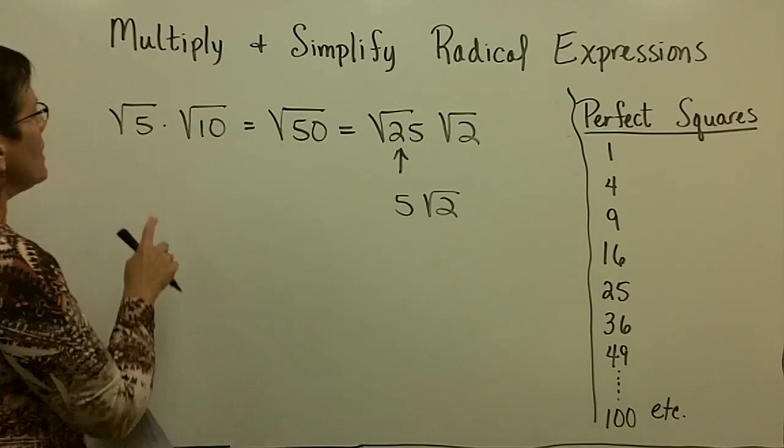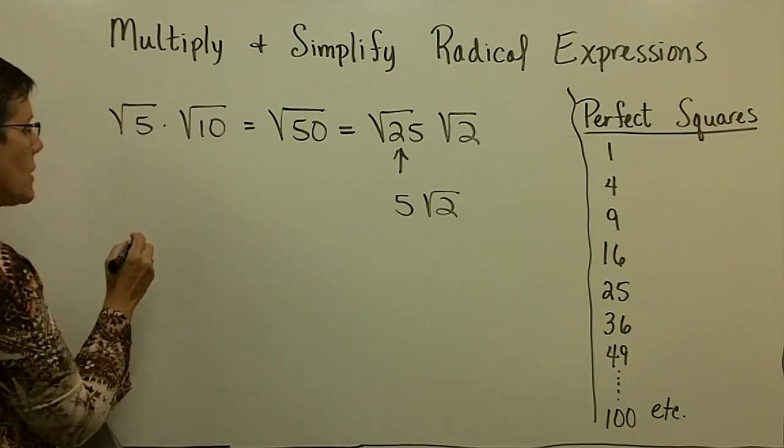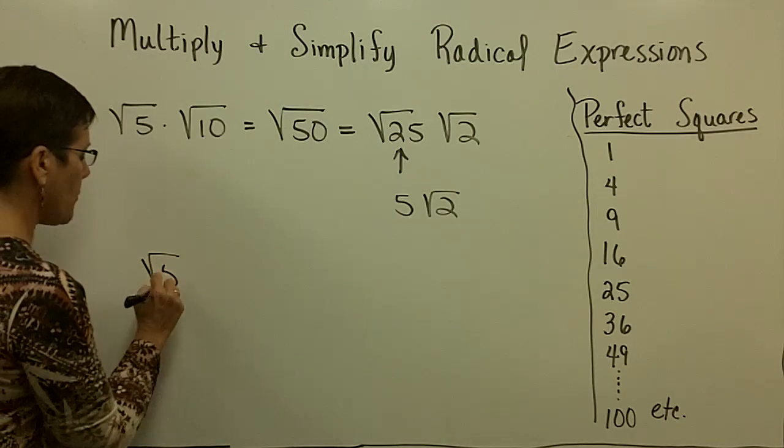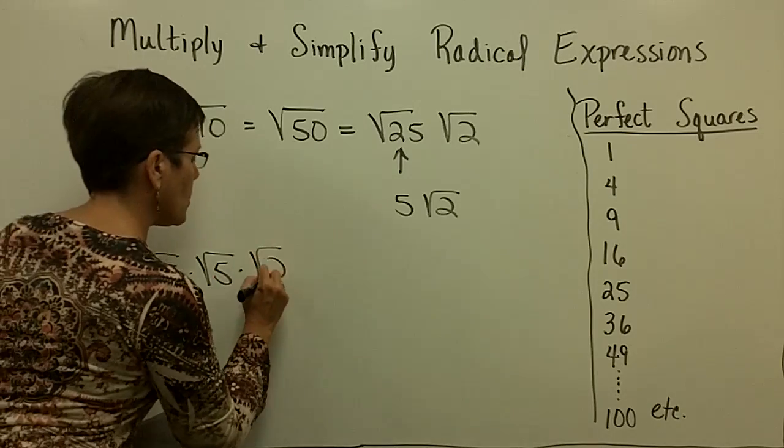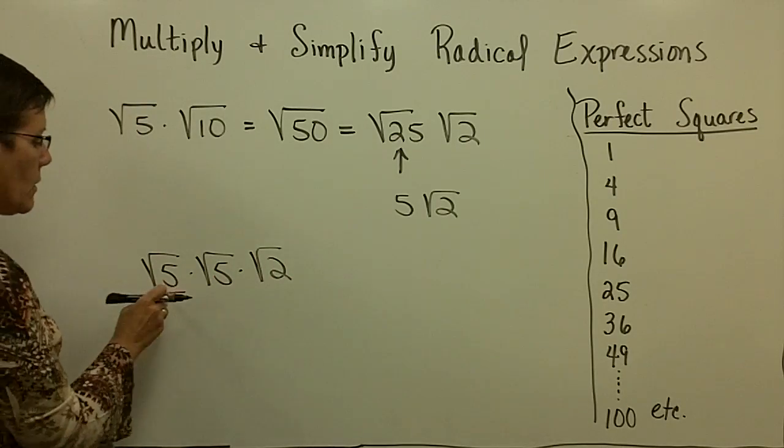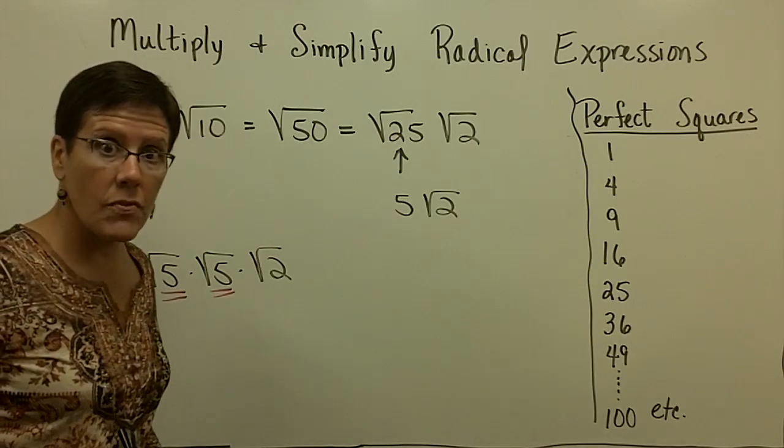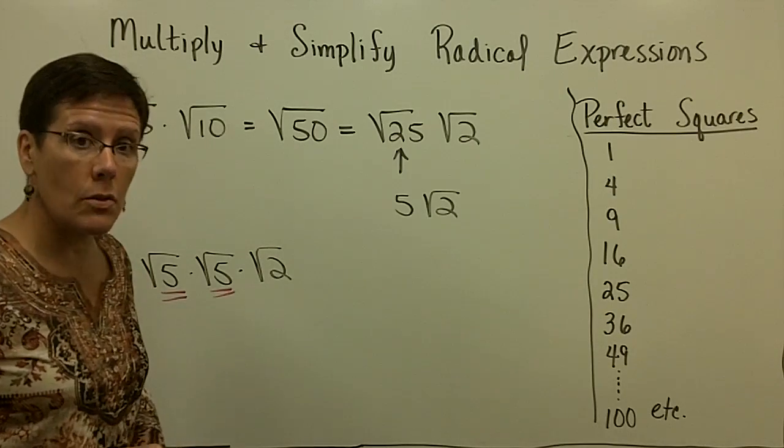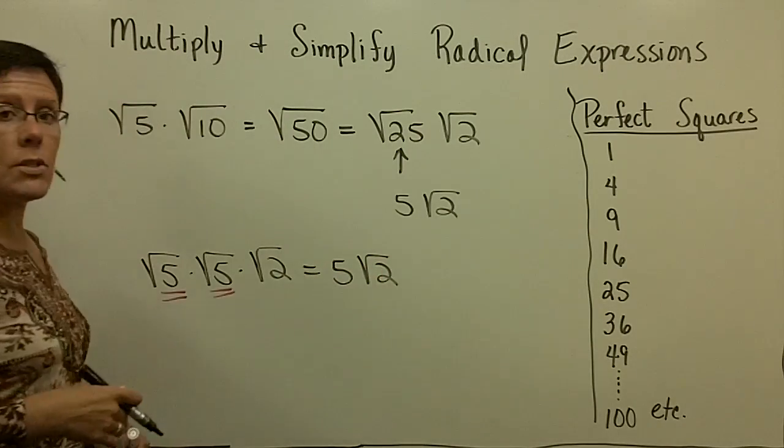Another approach would be to say to yourself, this is already prime. Let's break that into its prime factors. And so let's bring the square root of 5 down, and 10 is 5 times 2. And then you can say, I have the square root of 5 times the square root of 5, which is just 5. I have two of those factors under the radical. So that's just equal to 5. And then the square root of 2 is on its own.